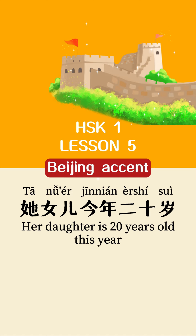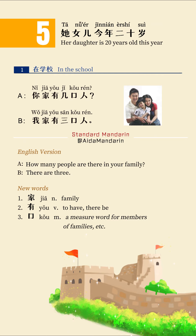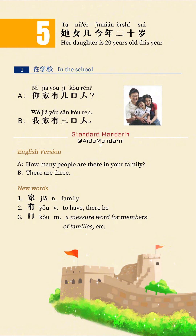Chinese Mandarin with a Beijing accent. Text one: 你家有几口人? — How many people are there in your family? 我家有三口人 — There are three. Vocabulary: 家 (Family), 有 (To have / there be), 口 (A measure word for members of families).